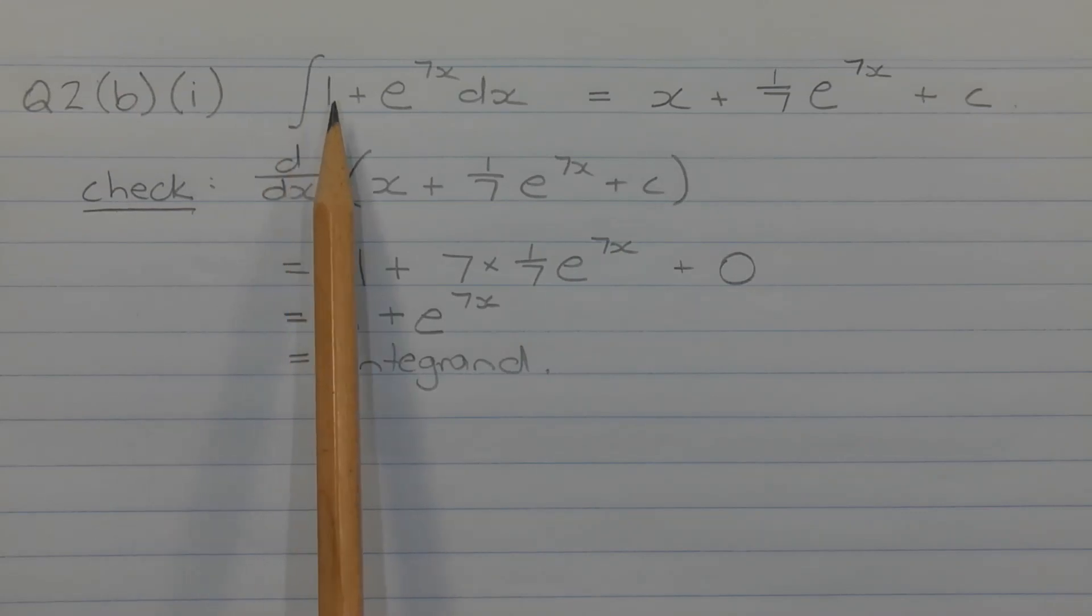The integral of 1 is x and the integral of e to the power of 7x is e to the power of 7x divided by 7, or can be written as 1 over 7 times e to the power of 7x. Don't forget to add the constant of integration c.